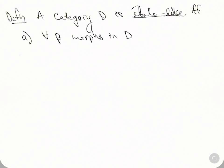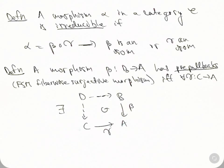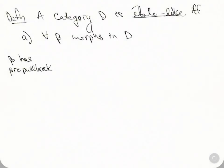if B has pre-pullbacks, so whenever I have one of these maps, whenever this is kind of like a fiber diagram, I can find a D that looks like a pullback, and beta is not an isomorphism,